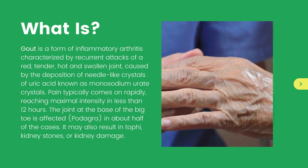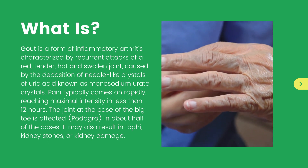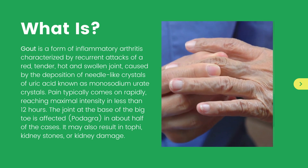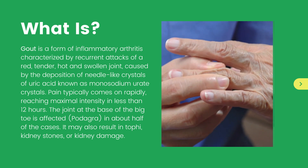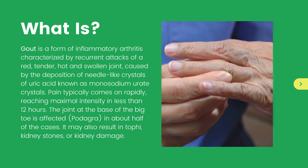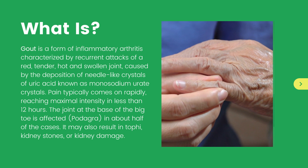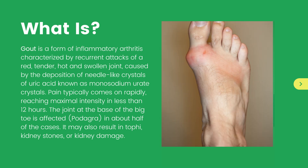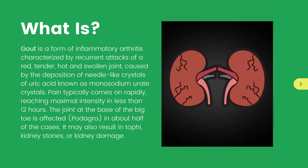Gout is a form of inflammatory arthritis characterized by recurrent attacks of a red, tender, hot, and swollen joint, caused by the deposition of needle-like crystals of uric acid known as monosodium urate crystals. Pain typically comes on rapidly, reaching maximal intensity in less than 12 hours. The joint at the base of the big toe (podagra) is affected in about half of cases. It may also result in tophi, kidney stones, or kidney damage.